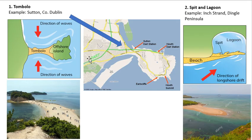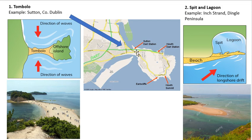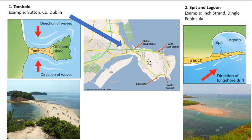A really cool example of a tombolo in Ireland is Sutton. Looking at the map, Howth is a nice little seaside town with a cliff walk — Howth used to be its own island thousands of years ago. Howth was joined to the mainland by a tombolo, and that tombolo is Sutton. So the town of Sutton sits on a tombolo. Because of deposition, the tombolo made its way out and eventually joined up with Howth.